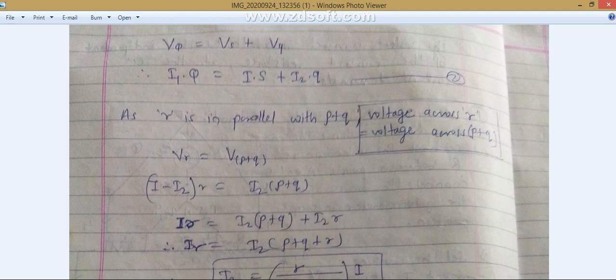That's why I am selecting this method. As small r is in parallel with P plus Q, you can write the voltage drop across small r and voltage drop across P plus Q is the same. So V_r equals V in bracket P plus Q. This is I minus I2 into small r equals I2 into P plus Q. V equals IR concept is used here.